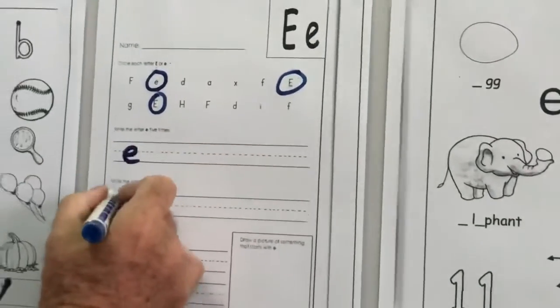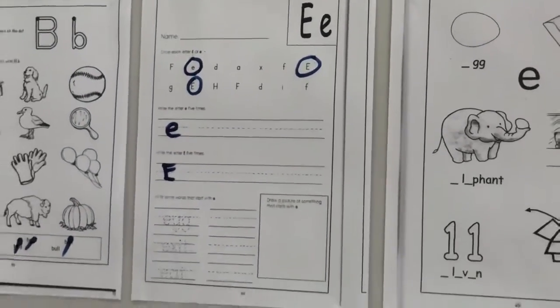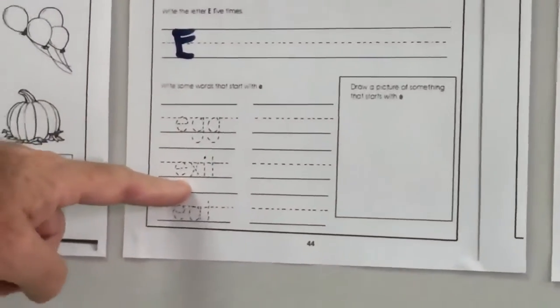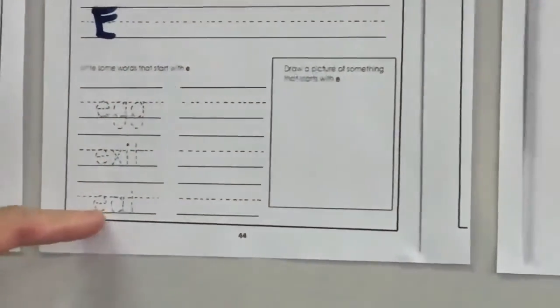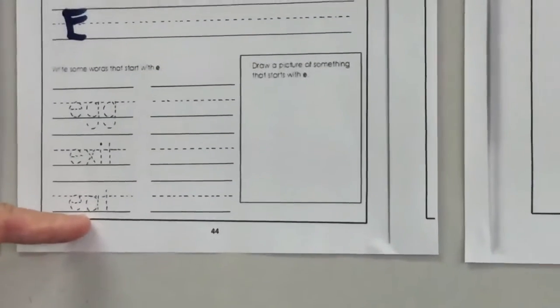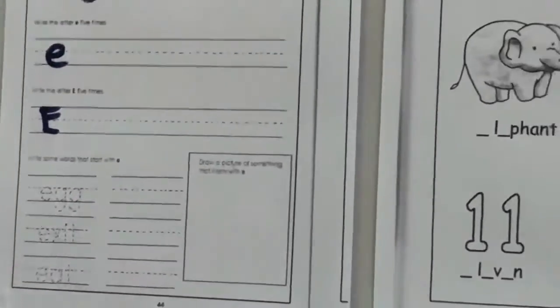And here look, we've got some words: egg, exit, exit to go out, to leave, and this one here, eat. OK, and then draw a picture of something with the letter E, just here, maybe elephant or egg.